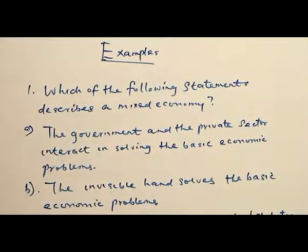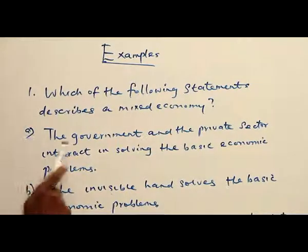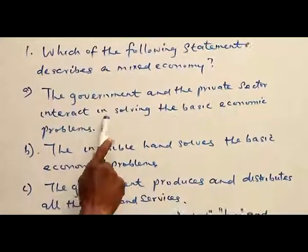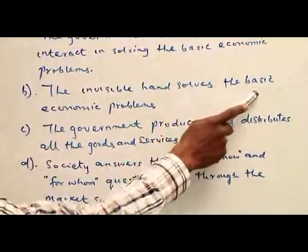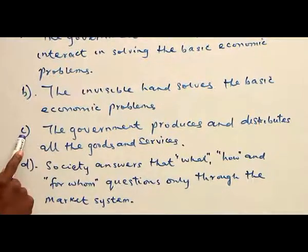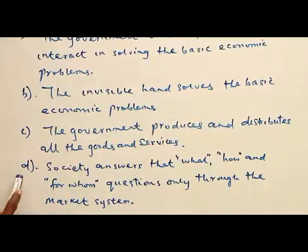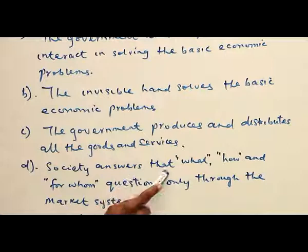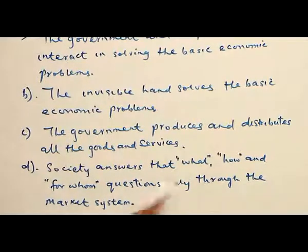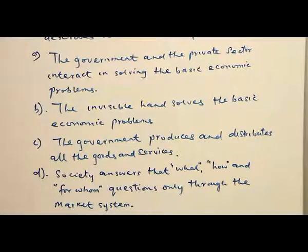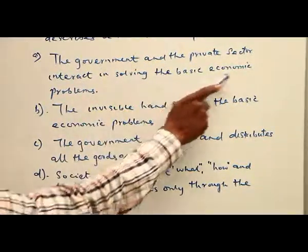Question one: Which of the following statements describes a mixed economy? A — The government and the private sector interact in solving the basic economic problems. B — The invisible hand solves the basic economic problems. C — The government produces and distributes all the goods and services. D — Society answers the what, how, and for whom questions only through the price system.